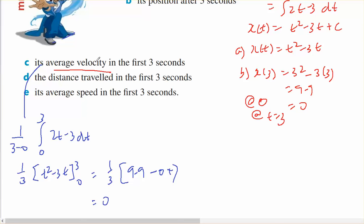So the average velocity is 0, and that makes sense because it starts at the origin and at 3 seconds it's back at the origin.